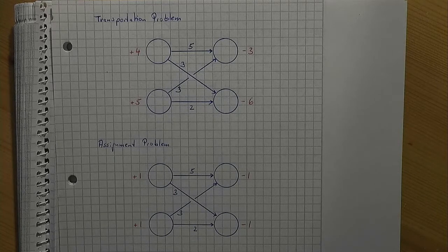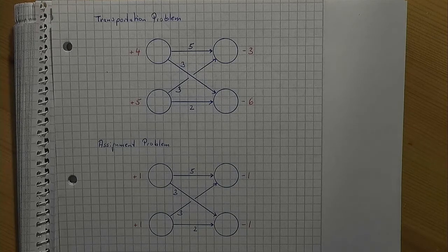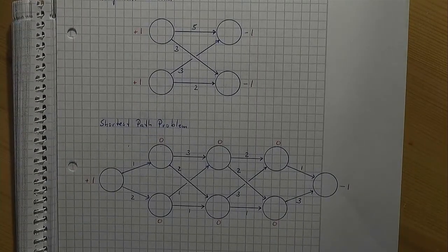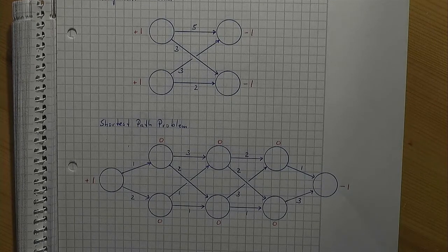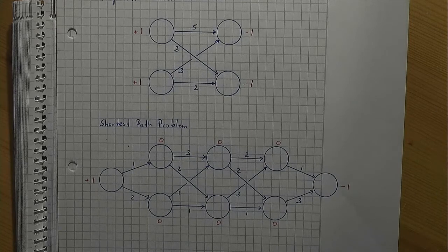And finally, we have the shortest path problem. A network flow problem with a single source with supply 1 and a single sink with demand 1. Arc weights would usually be interpreted as distances.